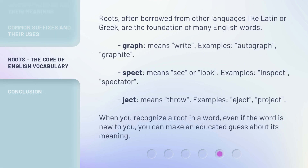Roots, often borrowed from other languages like Latin or Greek, are the foundation of many English words. 'Graph' means write — examples: autograph, graphite. 'Spect' means see or look — examples: inspect, spectator. 'Ject' means throw — examples: eject, project. When you recognize a root in a word, even if the word is new to you, you can make an educated guess about its meaning.